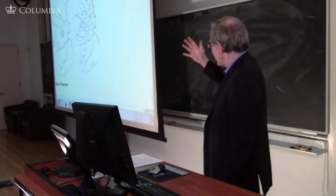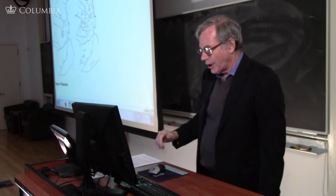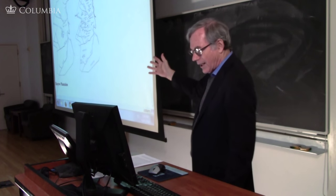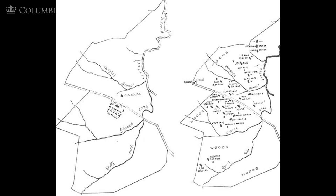The rise of sharecropping led to real radical changes in southern rural life. This is a very famous image of the Barrow Plantation in Georgia before and after the Civil War. Before the Civil War, the slaves are all living in one little community at the center — the big house up here, and the slave community living in slave cabins in one centralized place on the plantation.